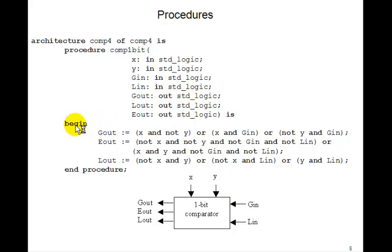And all we do in the begin, between begin and end procedure, is write down the logic equations for gout, for eout, and for lout, that we got from the Carnot maps. So, this defines this 1-bit comparator that we called comp1bit.